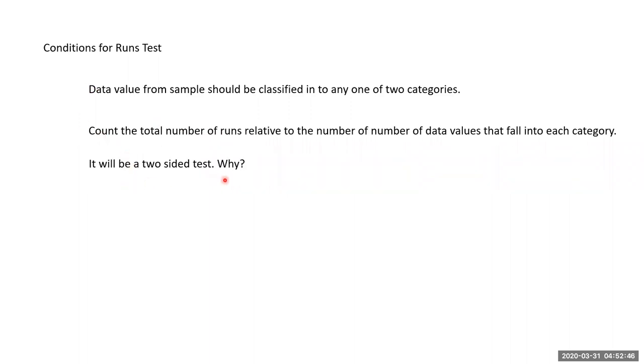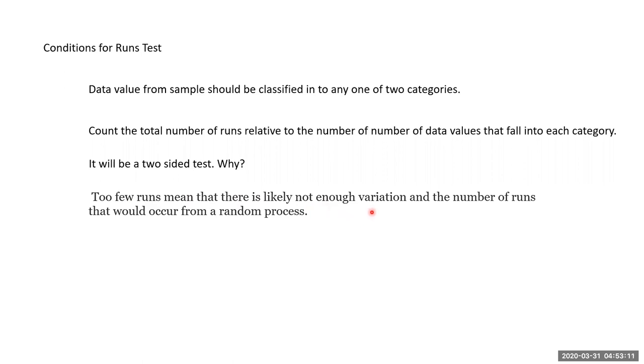It will be a two-sided test. You know why? Two few runs: if you take very few data, there won't be enough variation. Because if you toss two times and both times you get head, it may not look random but it may be a random process. Therefore, with too few runs, you may not be getting the variation. Too many runs: then it will be alternating between various categories, and if there are too many variations, it will look as if it's by random, which is not correct.